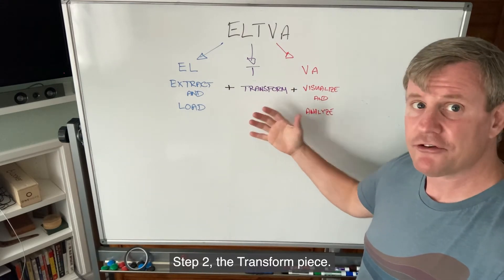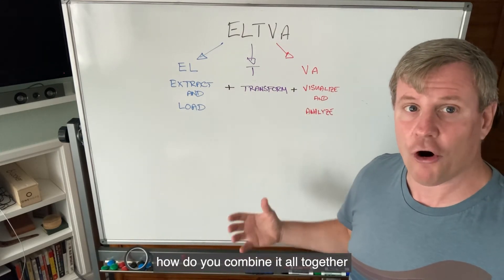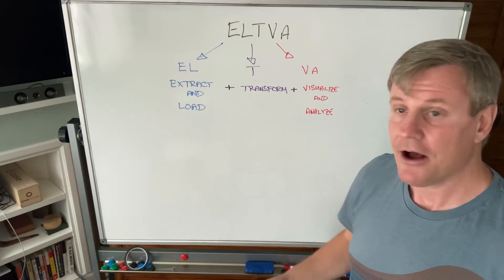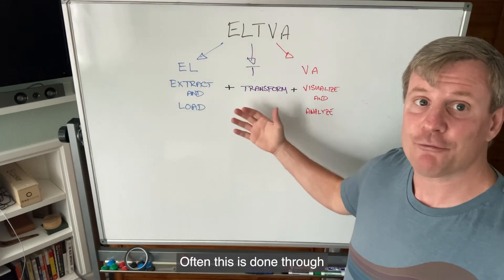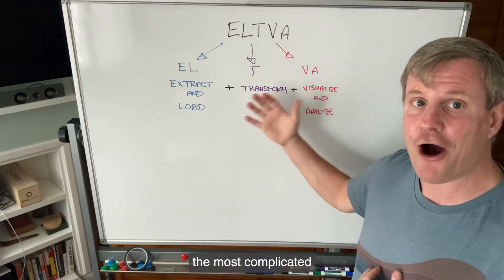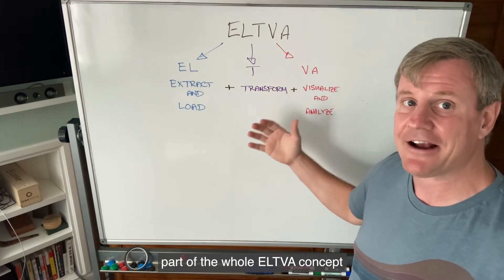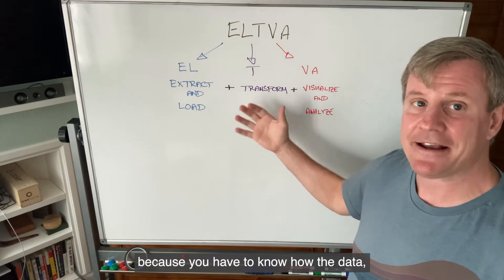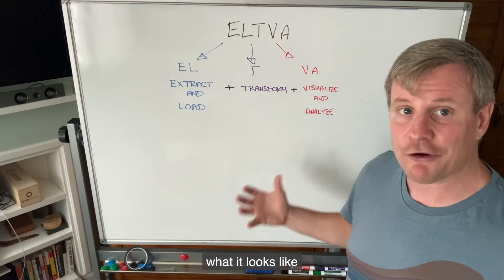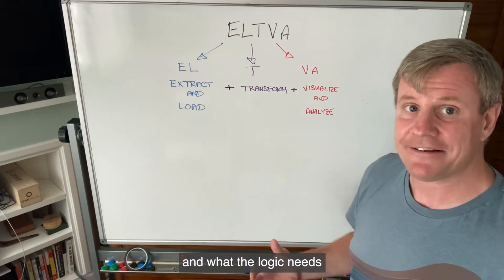Step two is the transform piece. This is how you combine it all together so it can really make sense for you. Often this is done through writing SQL queries, and this is the most complicated part of the whole ELTVA concept, because you have to know what the data looks like and how to put it together and what the logic needs to be.